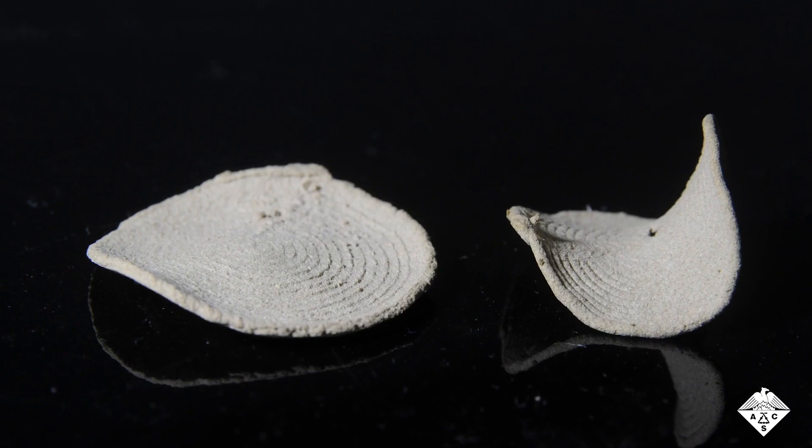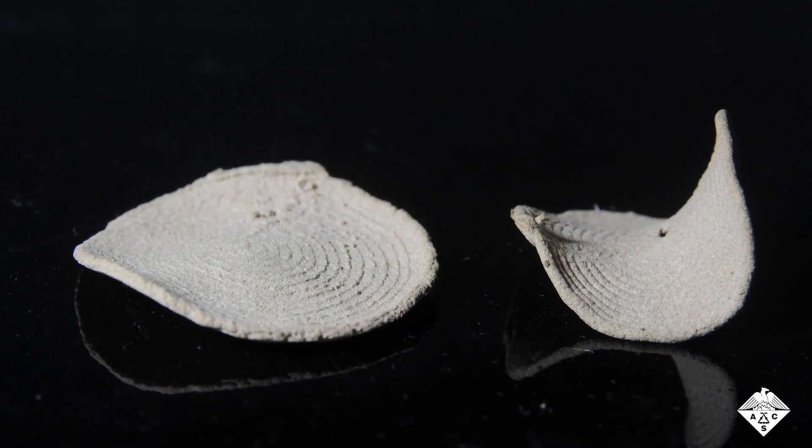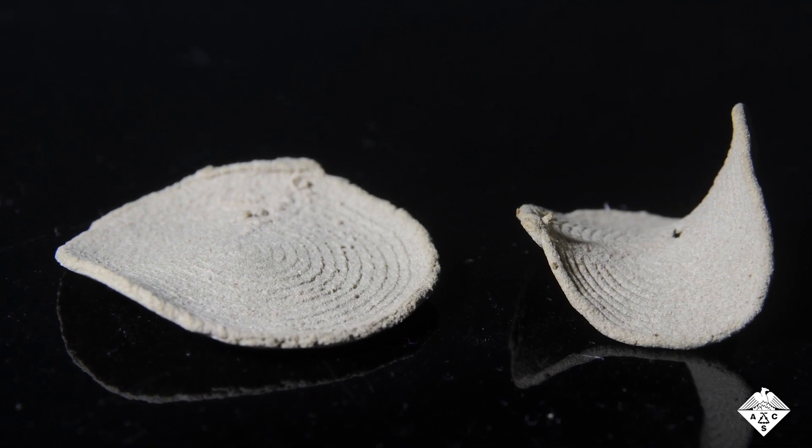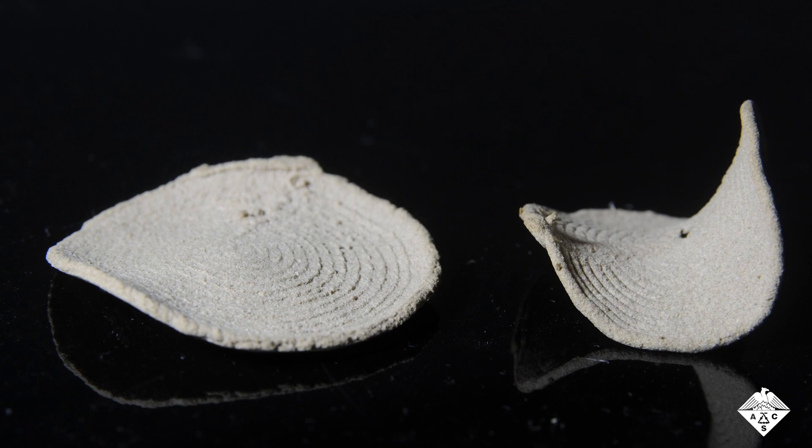A slower printing speed leaves the particles more randomly oriented, so shrinkage occurs in all directions, while faster printing aligns the fibers with one another, so shrinkage is more directional.